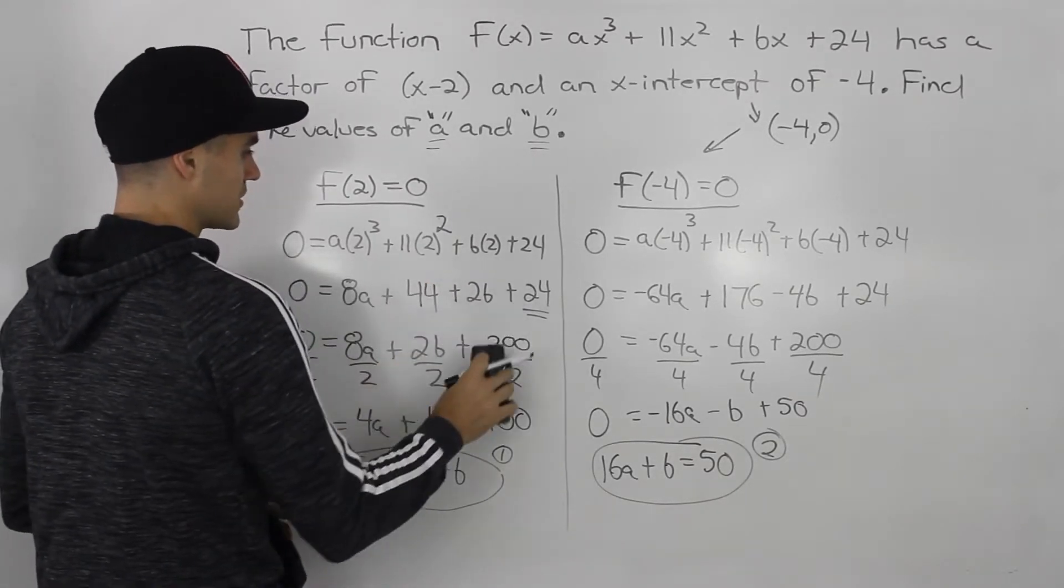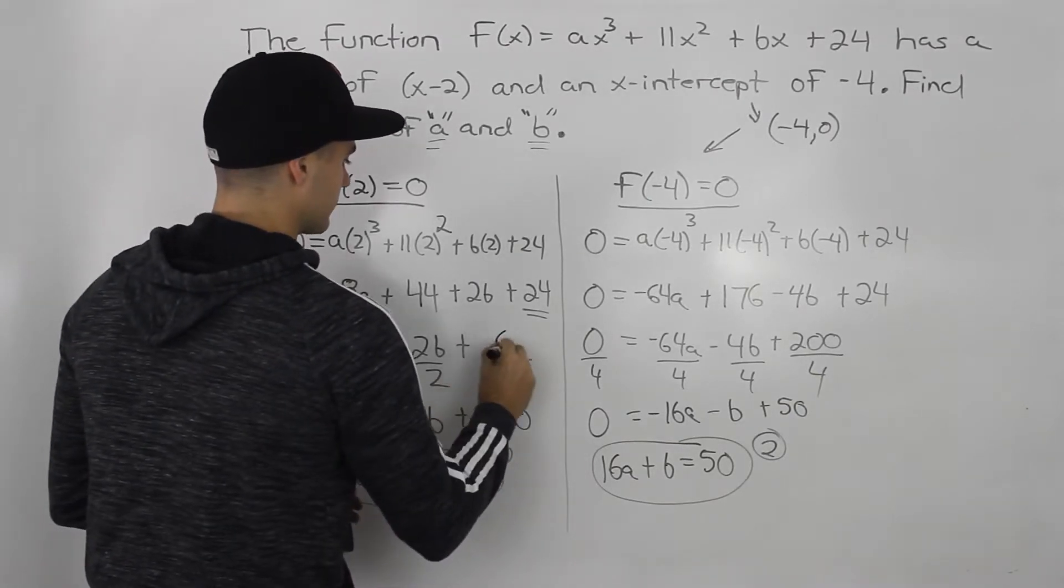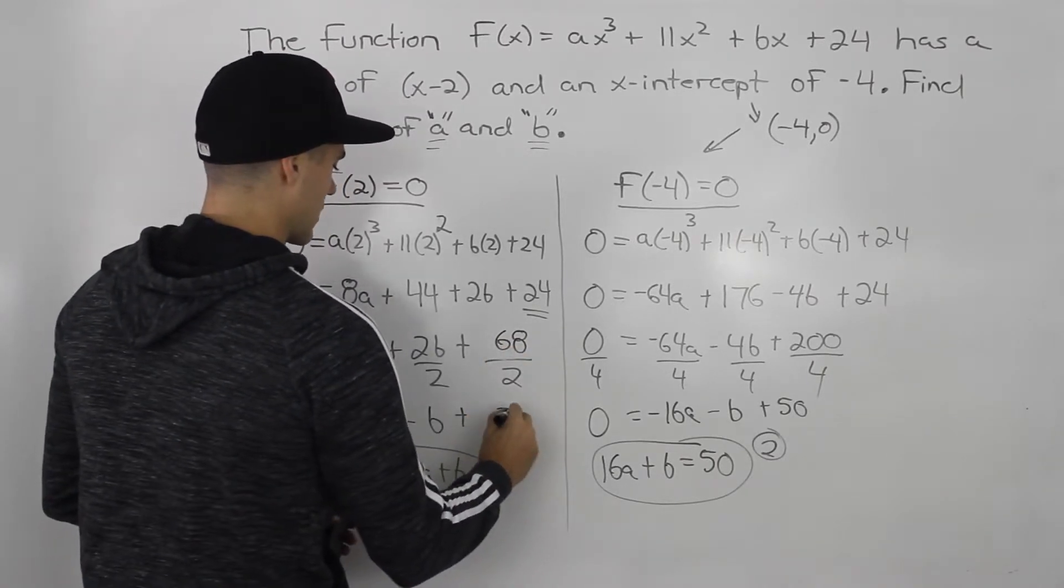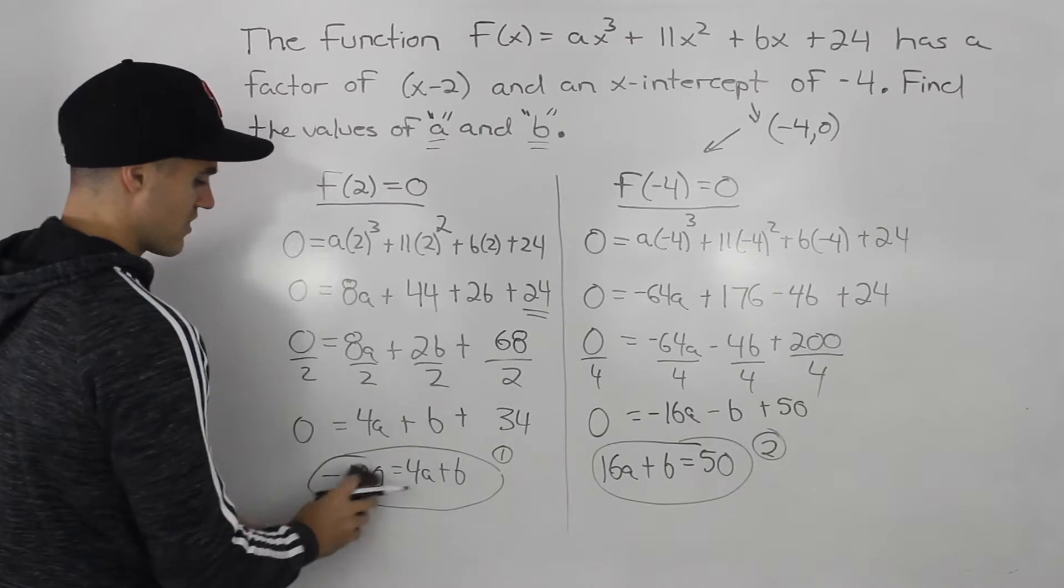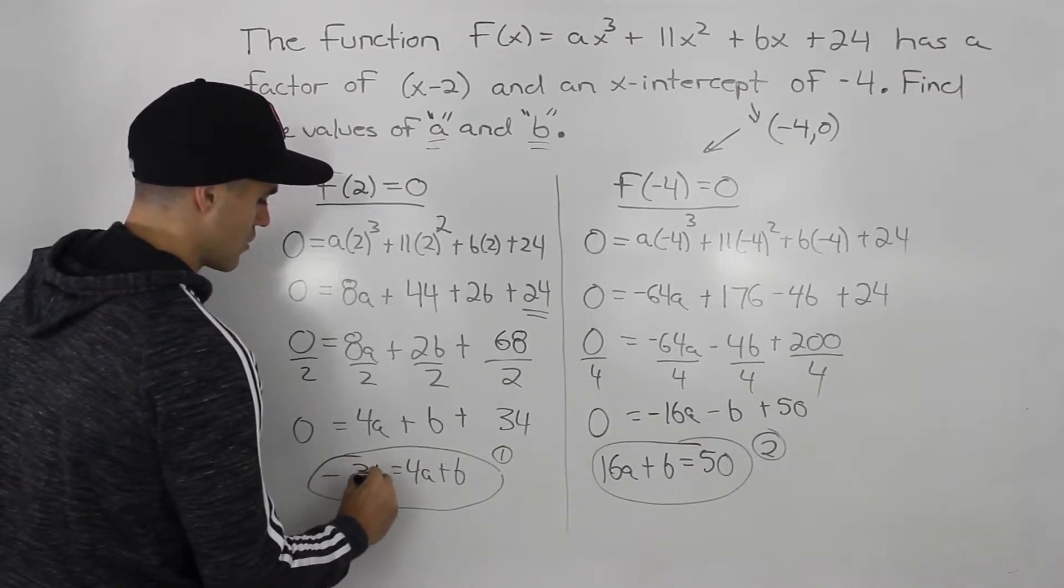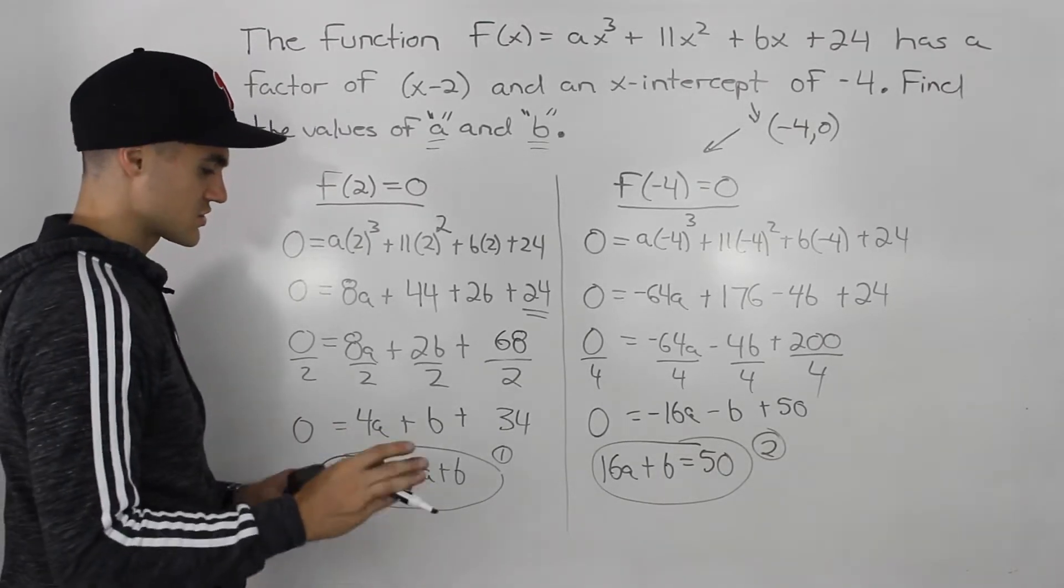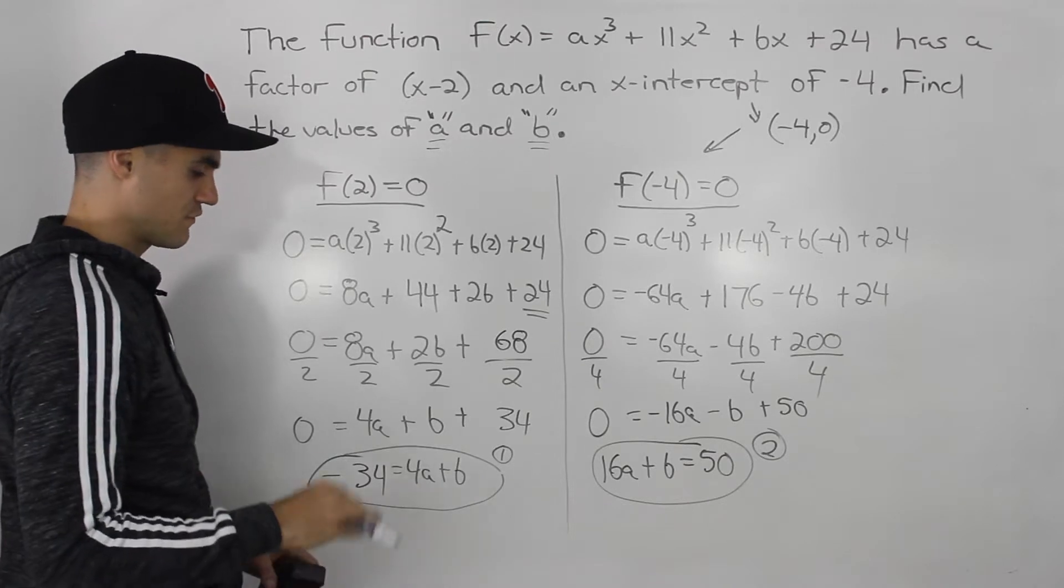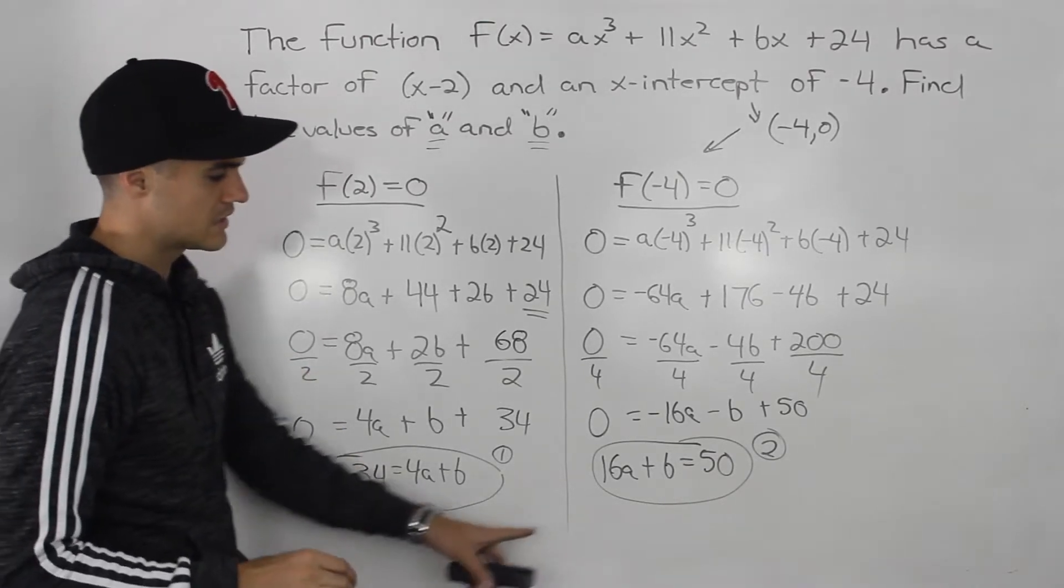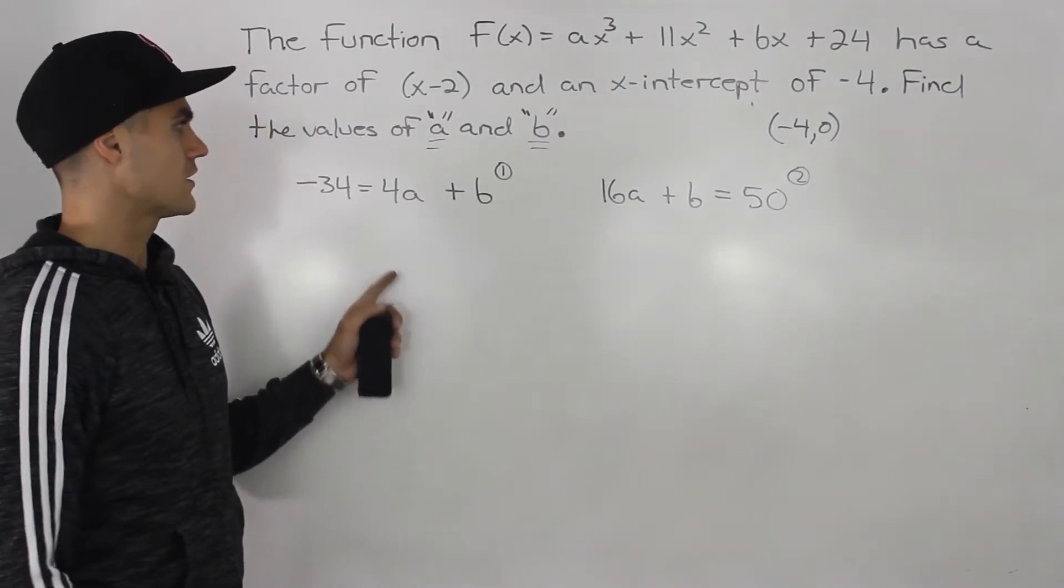So this 2 to the power of 2 is 4 times 11. This should be 44. Then 44 plus 24, that should be 68. 68 divided by 2 gives us 34. And then when we bring that 34 over, this here should be negative 34. So the two equations that we are going to use to solve for the constants a and b are our final correct equations are negative 34 equals 4a plus b, 16a plus b equals 50.